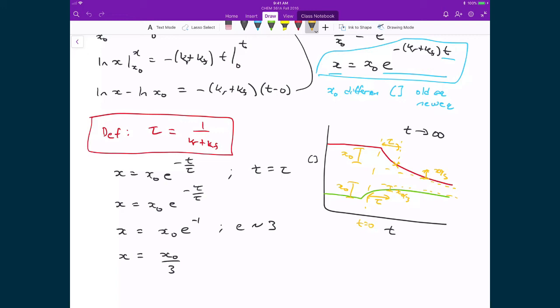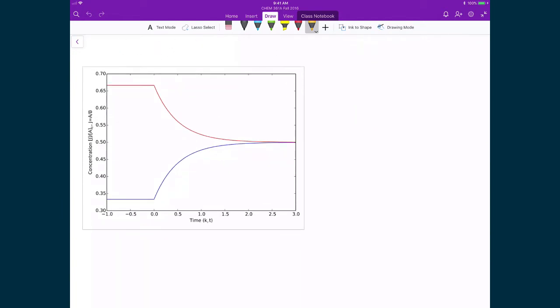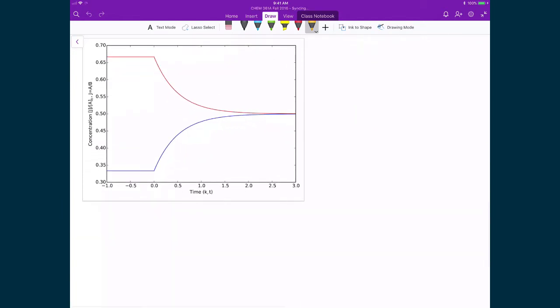Alright, so now that we have an expression for the time constant, which represents how long it takes for the system to re-establish equilibrium, let's now actually calculate what are the new equilibrium concentrations and also calculate what is that time constant tau.